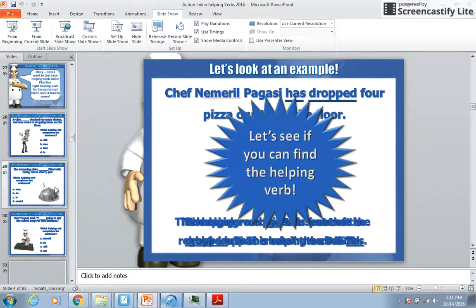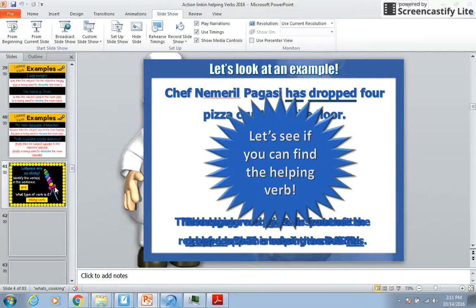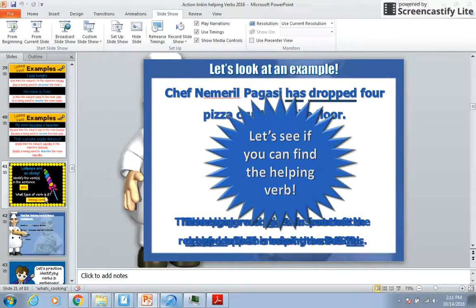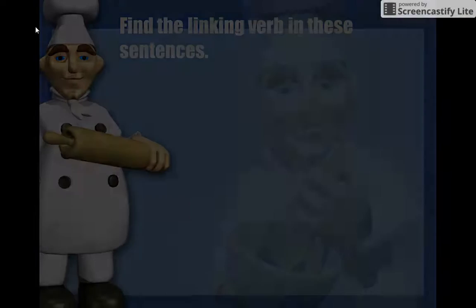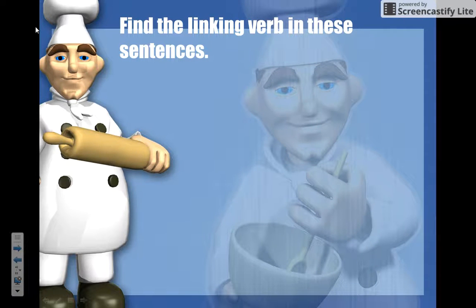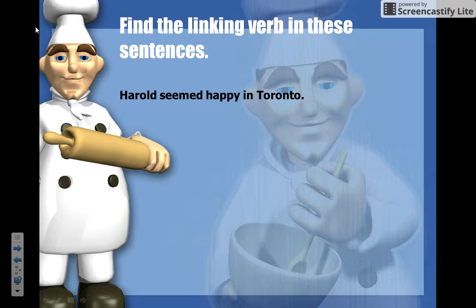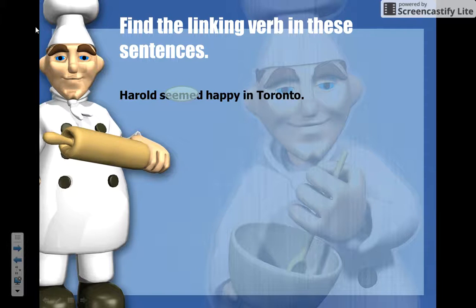Linking verbs link the subject to the predicate of a sentence, and you can usually replace the linking verb with an equal sign to show that connection. Also, linking verbs often talk about feelings — that's another way to find them. So if we say 'Harold seemed happy in Toronto,' we're looking for the linking verb. 'Seem' links Harold and 'happy in Toronto' — we could put equals there: 'Harold equals happy in Toronto.'